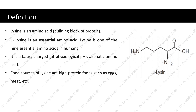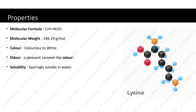Now let us see some properties of lysine. It has a molecular formula of C6H14N2O2. It has a molecular weight of 146.19 grams per mole. It appears colorless to white. It has a pleasant caramel-like odor. It is practically soluble in water.